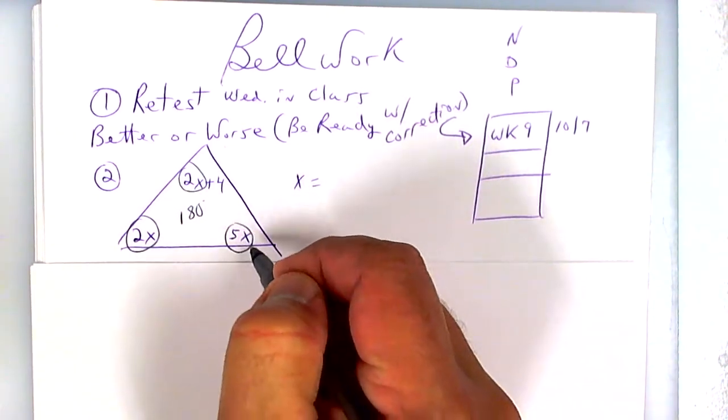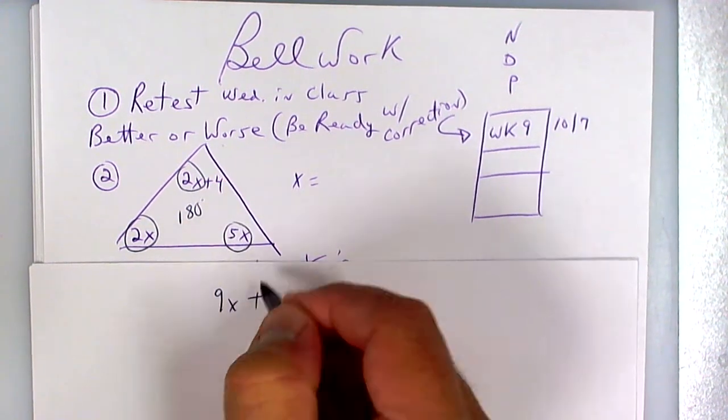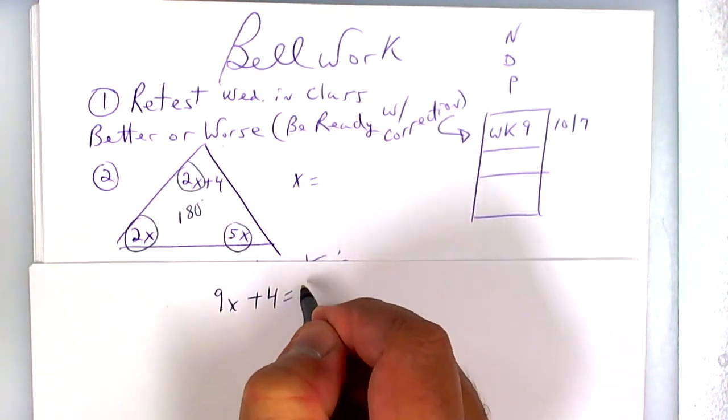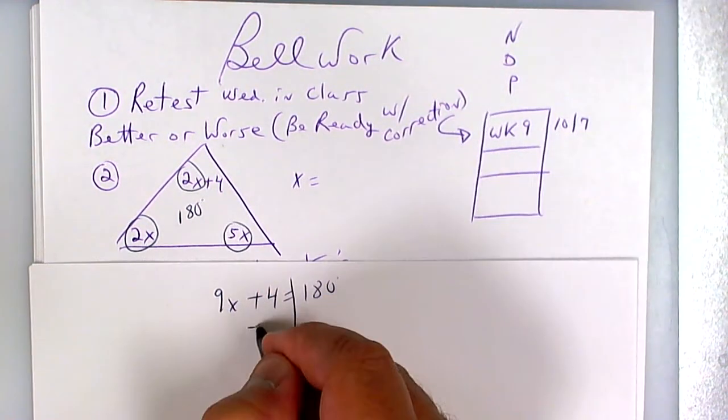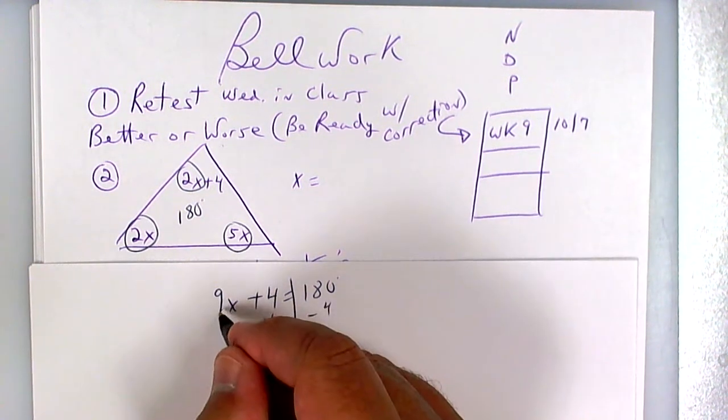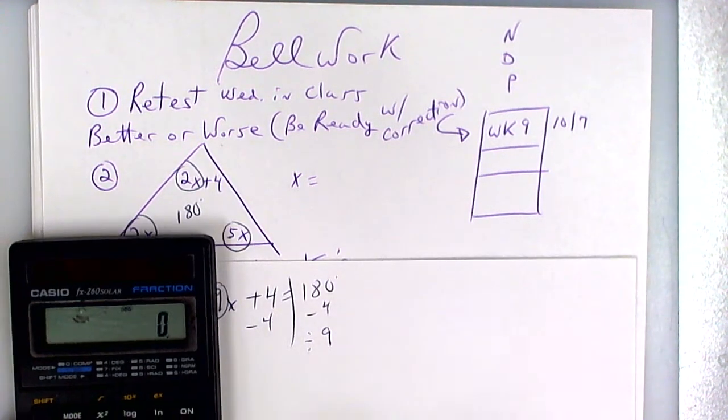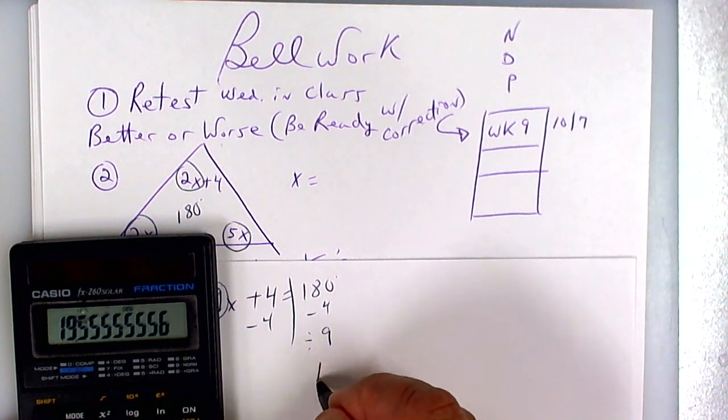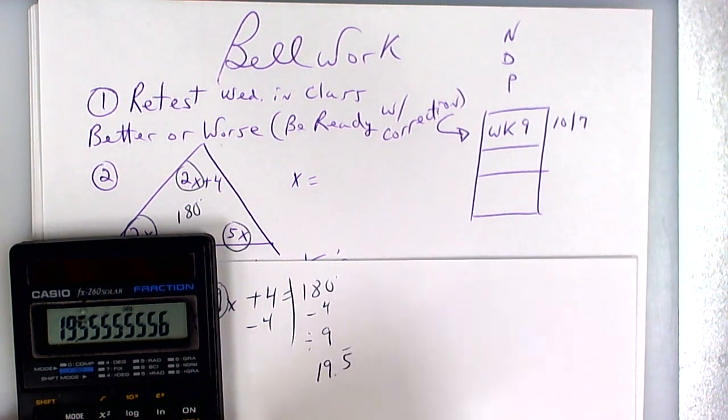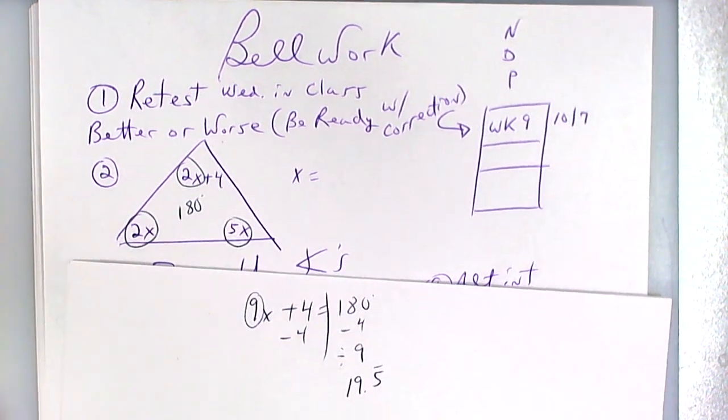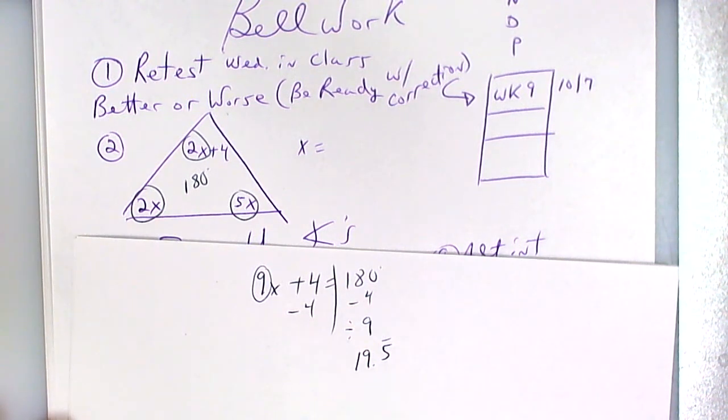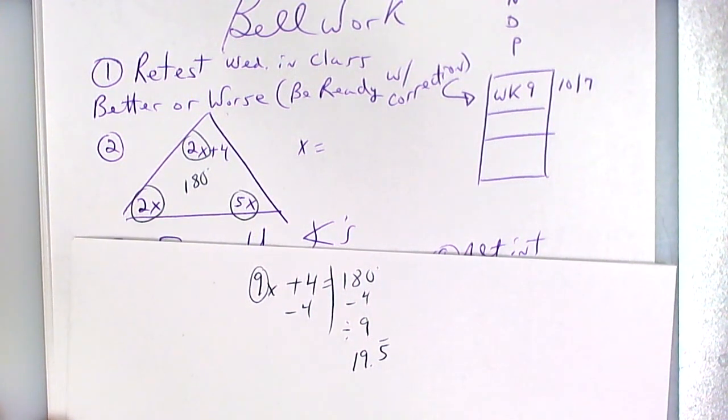You're going to subtract 4 and then divide by 9. Take your calculator: 180 minus 4 equals, divided by 9 equals 19.55. So 19.5 repeating. Any questions on how to do the triangle sum theorem?